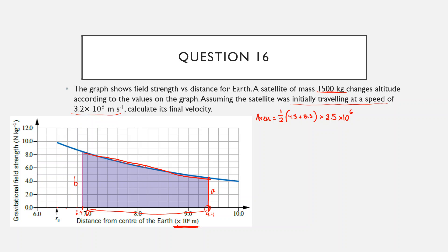That's the area of this thing. So that's going to equal: 0.5 times (4.5 + 8.5) times 2.5×10⁶, and I get 1.625×10⁷. It doesn't really have a unit — we just leave it like that for now. So that's the area under the graph.